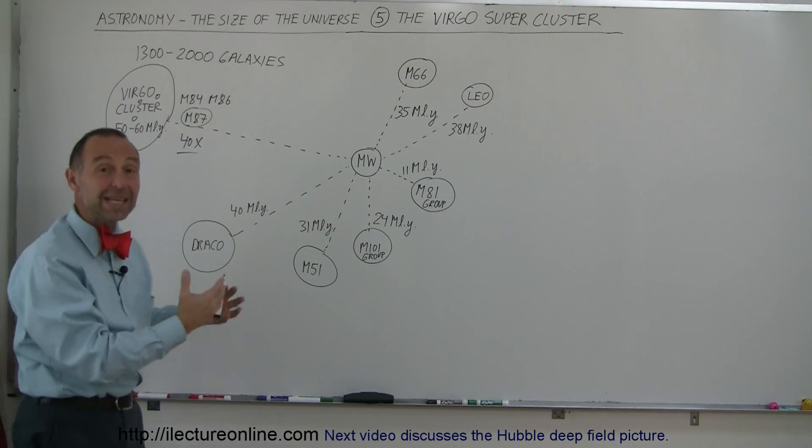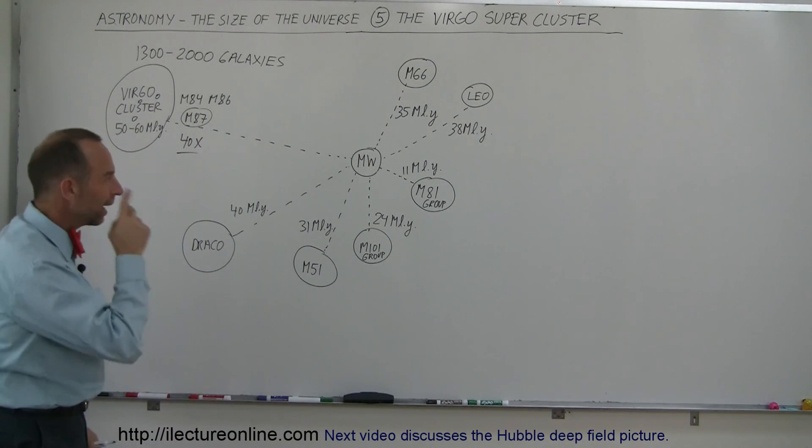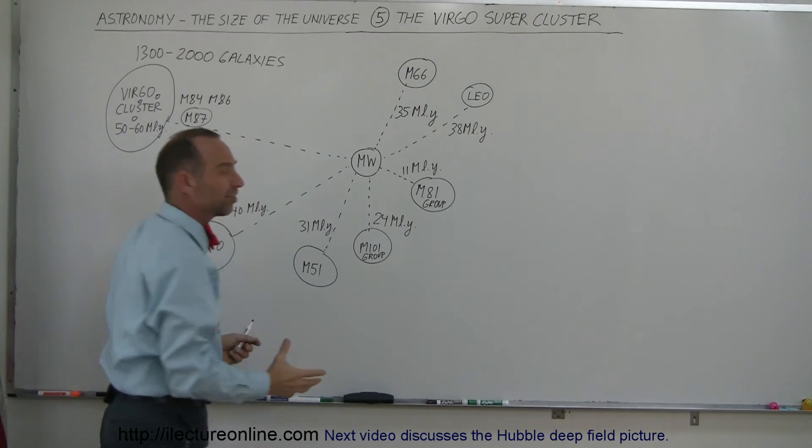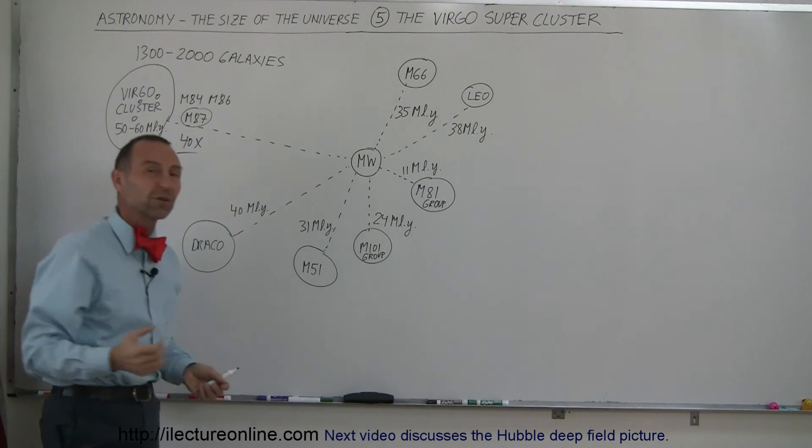And guess what? There's many, many, many of those super-clusters all around in our galaxy. And think about the enormous distances between the clusters that make up one of those super-clusters. Imagine a distance of 100 million light-years across one of those clusters.